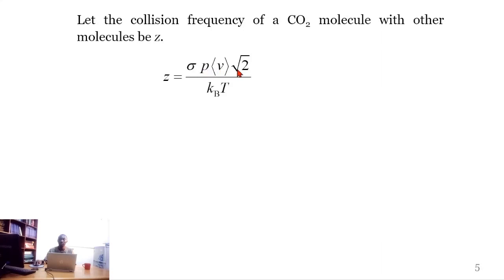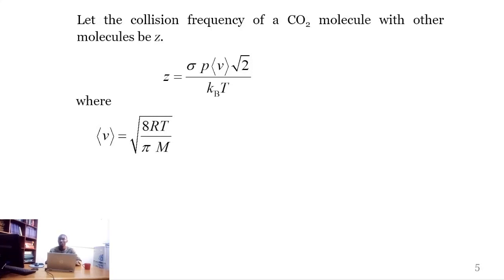The full collision frequency formula includes the mean speed, multiplied by root 2, divided by the product of the Boltzmann constant and temperature. The mean speed, taken from our first workshop lecture, is given by the expression: 8 times the gas constant times temperature, divided by pi times the molar mass, all under a square root.